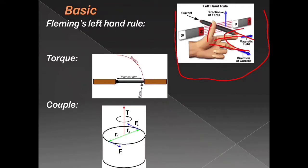Let's see torque. Torque is applying force on the axis of an edge so that it produces a rotation. This is called torque. The torque formula is force into distance. For example, when you apply force on the edge of a door, the door will rotate.